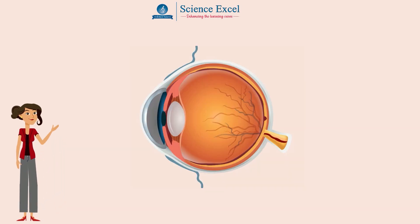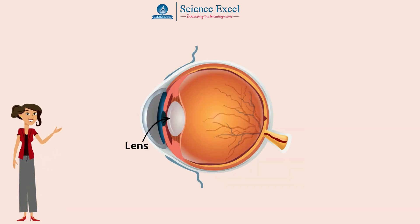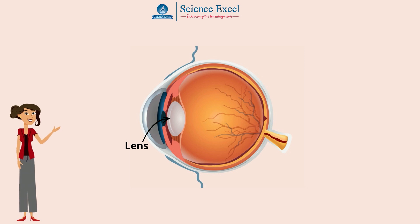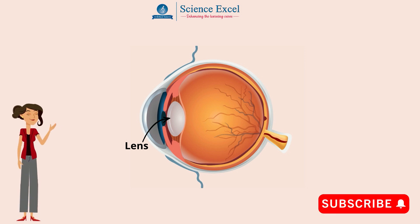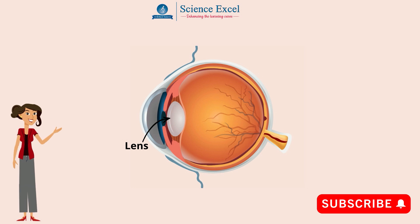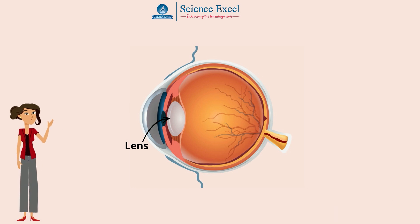The eye changes the shape of the lens to cause more or less refraction through the process of accommodation. The shape of the lens can be adjusted to bend light rays more or less.